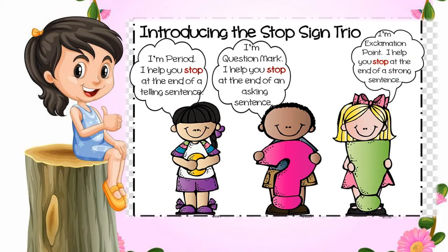Now let's see the uses of the punctuation mark — full stop. In the previous lessons we learned about types of sentences: statement sentence and question sentence. A period helps you stop at the end of a telling sentence, that is a statement sentence. With the end of a statement sentence, we use full stop.